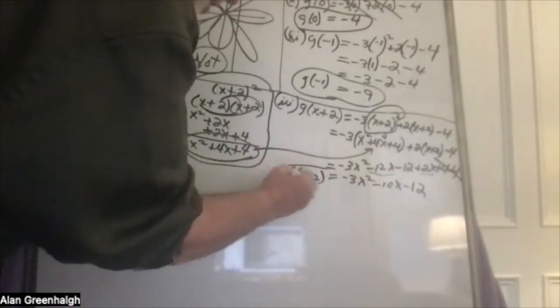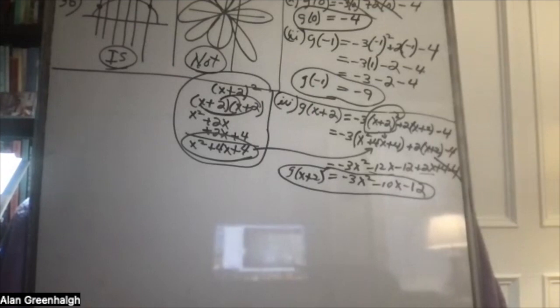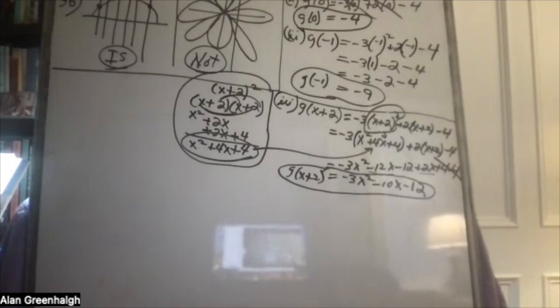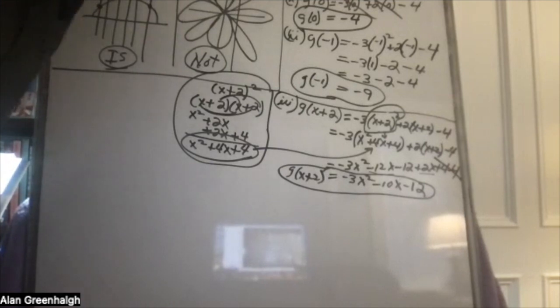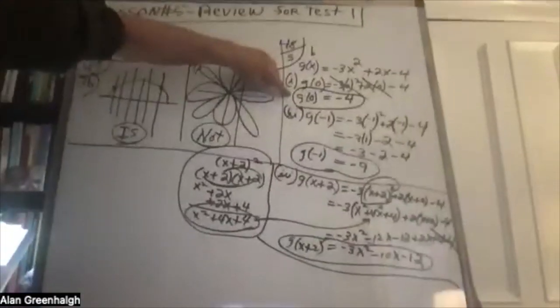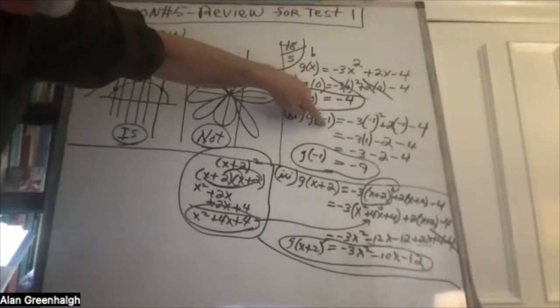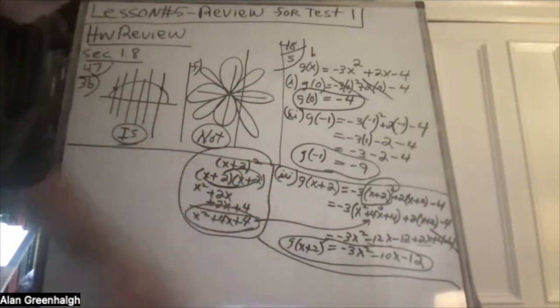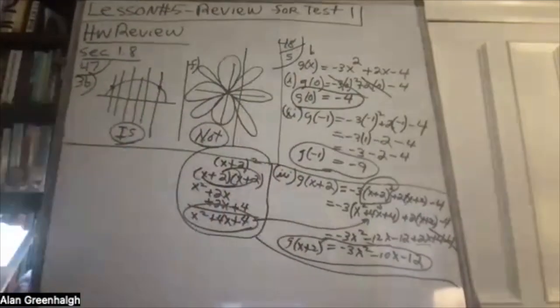So g of x plus two is equal to that expression. I'm checking my work — I always make math mistakes. Looks right. They give you an easy one with g of zero, then g of negative one, and then the more complicated g of x plus two — that's the philosophy of the problem.